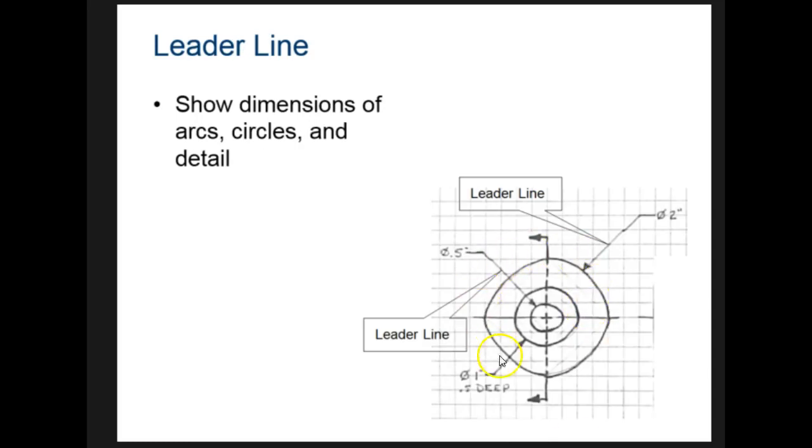And leader lines. This happens to be three circles drawn on top of each other like a little stack of cylinders, and these are so that we can show the dimensions. This little symbol right here, a circle with a slash through it, means diameter. So that's saying this one has a diameter of 2 inches, this one has a diameter of 0.5 and so on. Notice they have a little arrow here. The leader line comes out and then it's got a little tail that's horizontal. The little horizontal tail should be about one square long when you draw them.